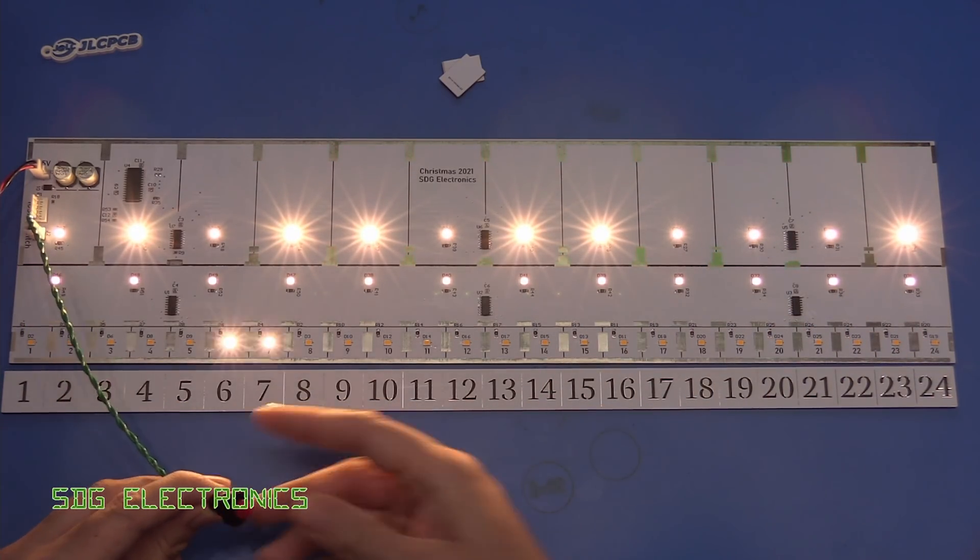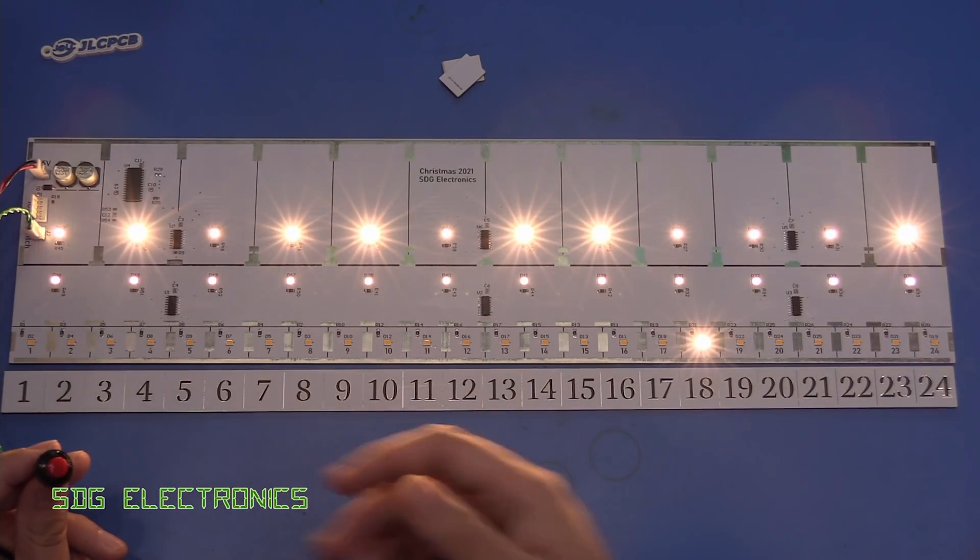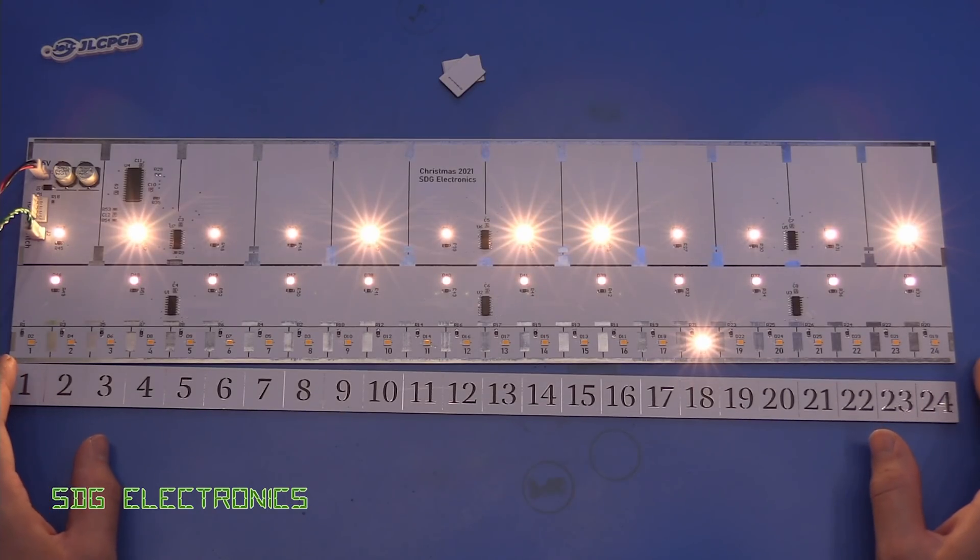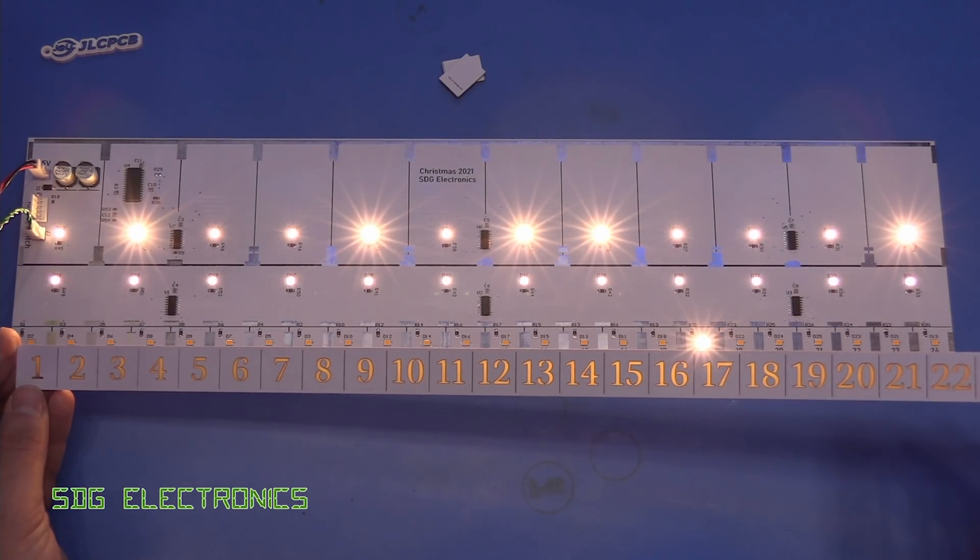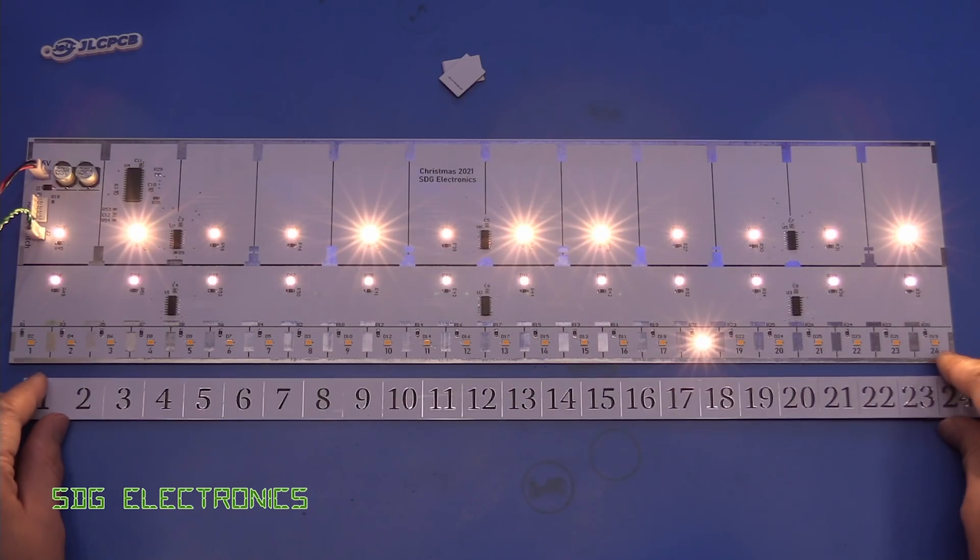You can keep pressing that and it advances. Once it gets to 24 it will go back to one. I've had another PCB made with the numbers on it.